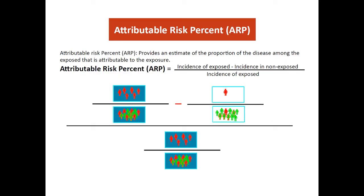The attributable risk percent is another term. It describes the proportion of disease incidence in the exposed group attributable to the risk factor, and is calculated by dividing the attributable risk by the incidence rate in the exposed group.